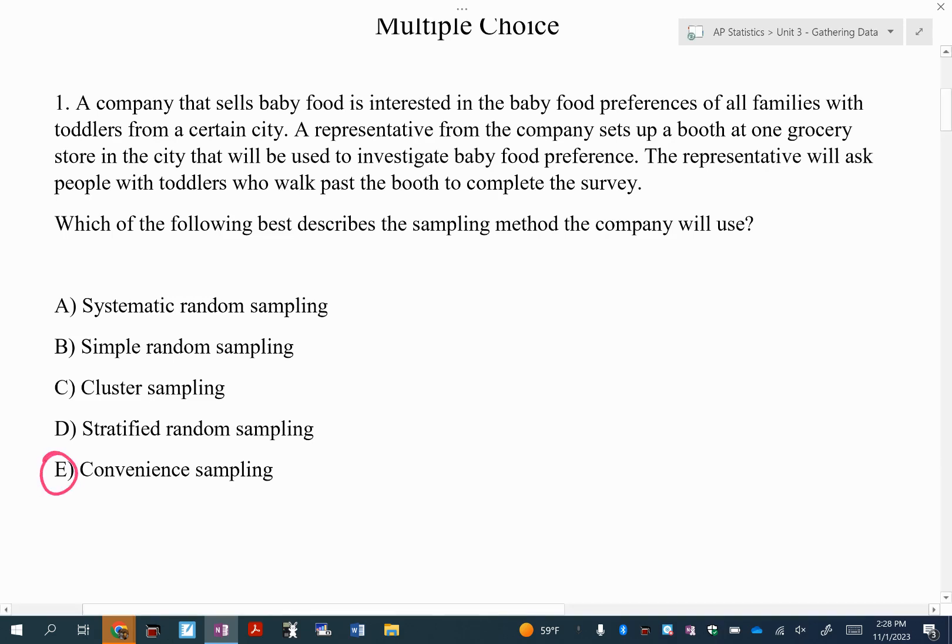Remember, if it's going to be systematic, it has to say something like every 16th customer gets asked. Simple random sample, they probably have to get a number for every person in the store and then randomly choose a certain amount of those. Cluster sampling, they'd separate the customers into groups somehow and then choose randomly some groups and ask everybody in those groups. And then stratified would be separating again by homogeneous groups, so a characteristic that makes the groups the same and then sampling a little bit from each of those groups.